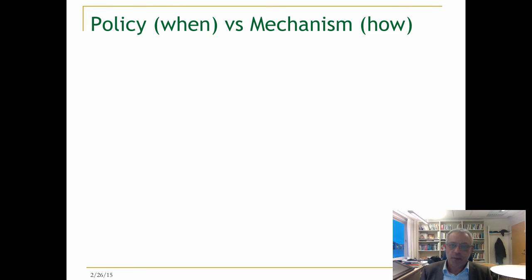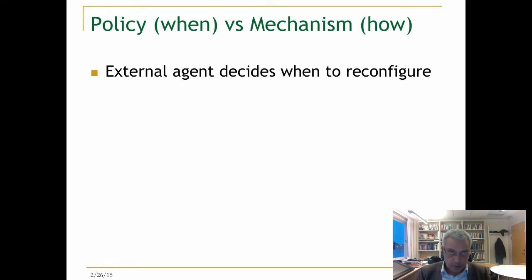In replicated state machines, we have to distinguish between policies and mechanisms. Policy tells you when you are going to reconfigure a system, and the mechanism is how you are going to reconfigure the state machine. One possible view about when is to let an external agent decide when to reconfigure.